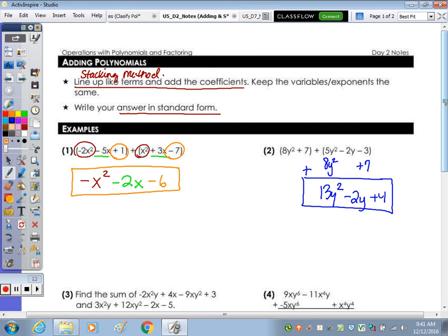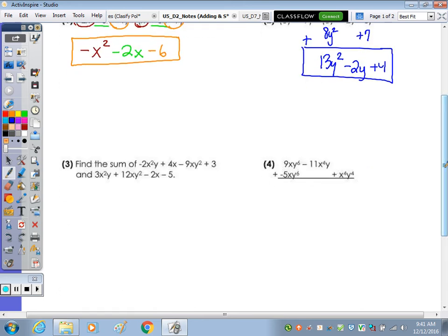Number 3, find the sum. Sum just means to add. So I'm going to add the like terms without stacking. So I'm going to use squares and circles to highlight my like terms. So all the x squared y terms, I'm going to put a box around. So that negative 2 x squared y, and the positive 3 x squared y. Together, that would add to a positive—3 minus 2 is a positive 1 x squared y.